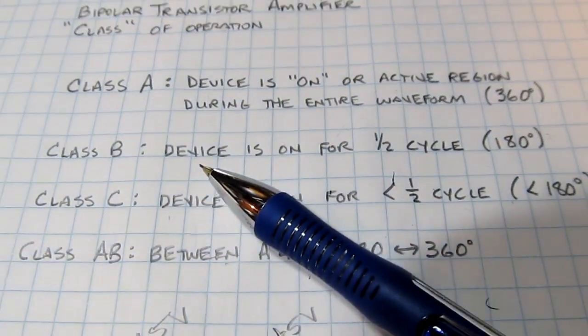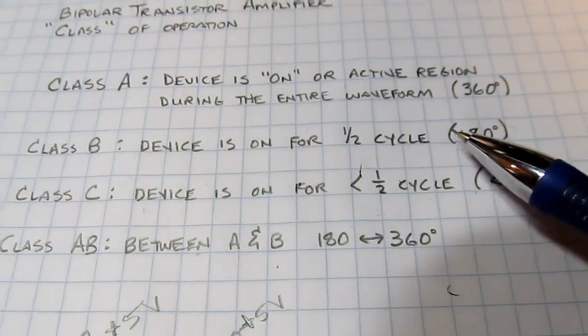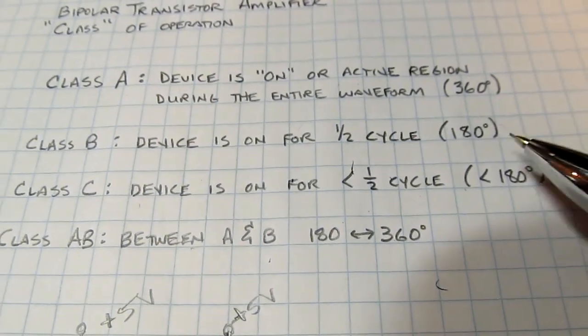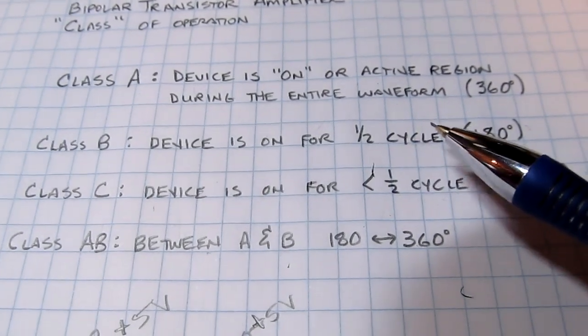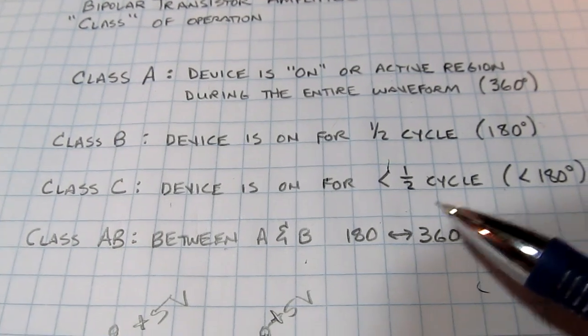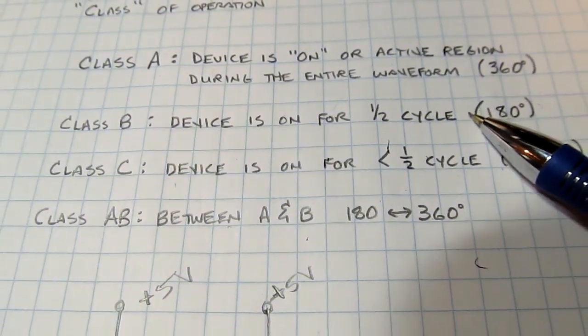Class B is when the active device or the transistor is on for only half the cycle. It's only on for maybe the positive or negative half cycle. Since the transistor is off half the time, it's a lot more efficient, but it also adds a fair amount of distortion to the waveform, which might be able to be filtered out.